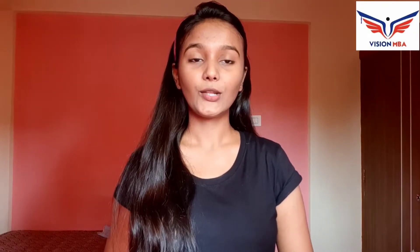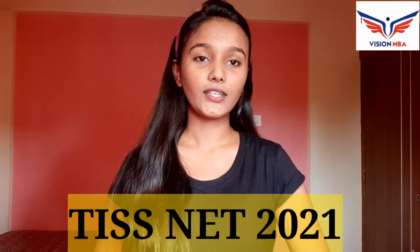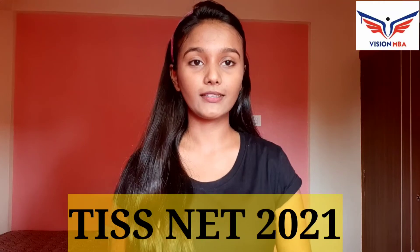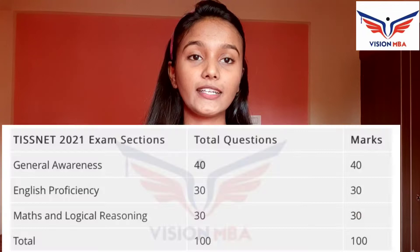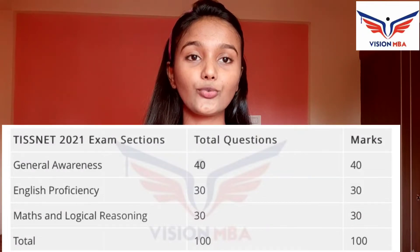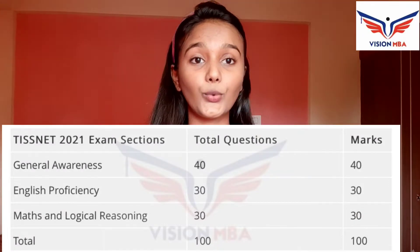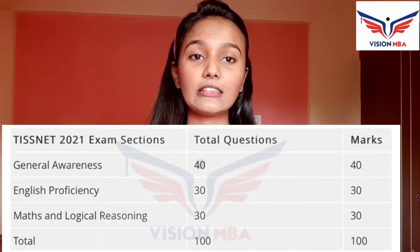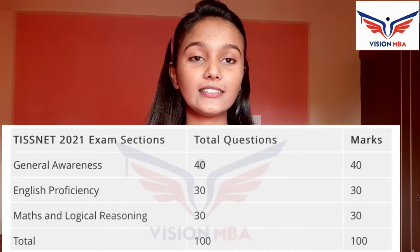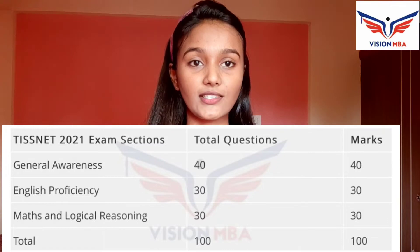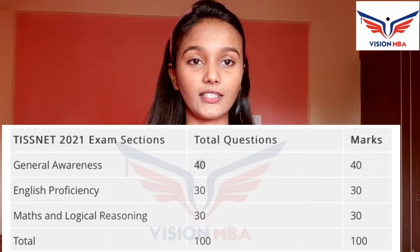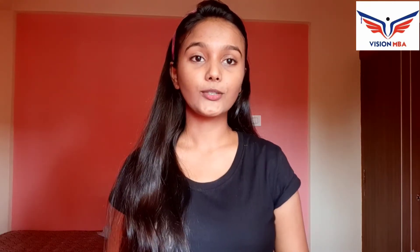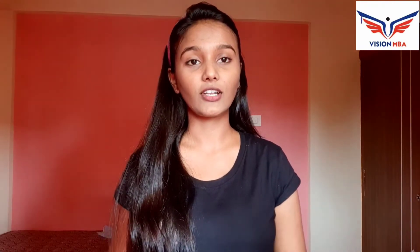Welcome to Vision MB. Today we are going to talk about ISNET 2021, for which we have approximately one month remaining. We'll start with the basic information: it comes for 100 questions, each question carries one mark, there is no negative marking. There are three sections — first is General Awareness, second is English Proficiency, and third is Maths and Logical Reasoning. We'll start with the first section, which has the most weightage: General Awareness.